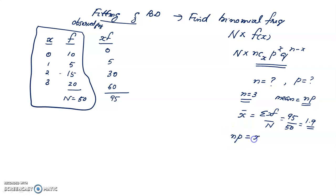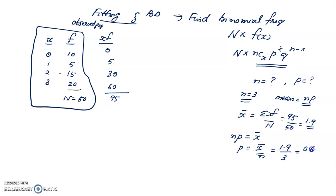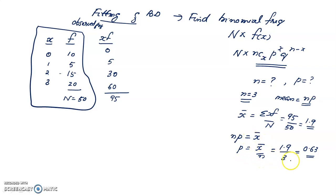Equating the binomial mean to the sample mean: np = x̄, so p = x̄ / n. With x̄ ≈ 1.9 and n = 3, p = 1.9 / 3 ≈ 0.633, and therefore q = 1 − p ≈ 0.37. These values of n, p, and q are then used to compute the fitted binomial frequencies.